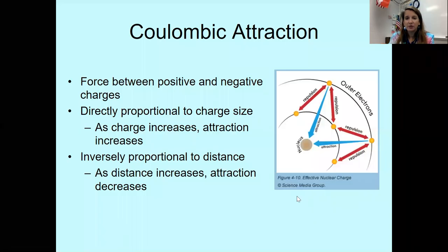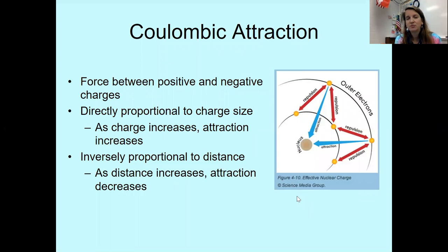We're going to go over the first part of periodic trends in this video, specifically the effect of nuclear charge and the shielding effect. Firstly, let's talk about Coulombic attraction. We have already talked about the attraction between the nucleus and the electrons before in the electrons unit. Coulombic attraction is that attractive force between those positive protons and those negative electrons. The Coulombic attraction of an atom is based primarily on two different factors: charge size and distance. The greater the number of protons and the positive charge of the nucleus, the more attraction there will be between the nucleus and the valence or core electrons.